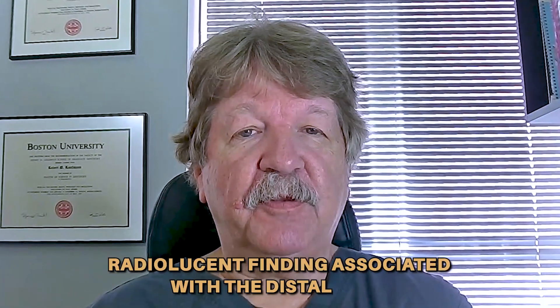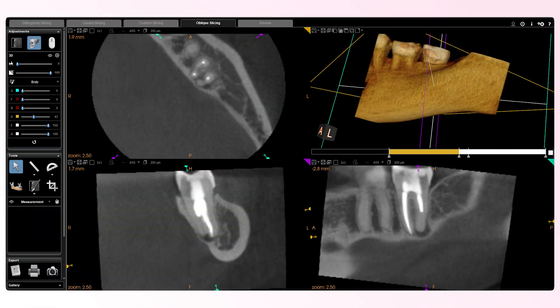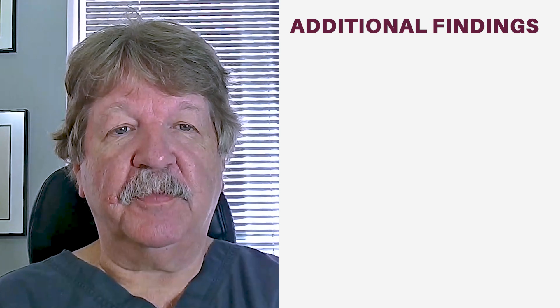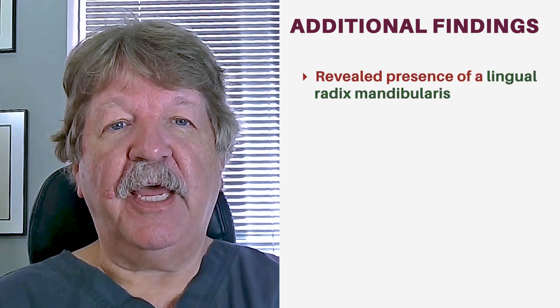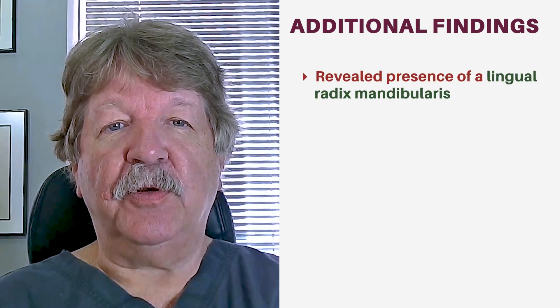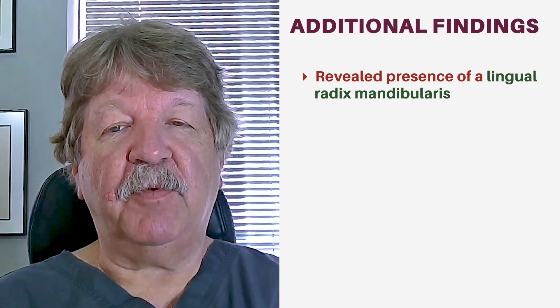Conventional periapical imaging showed a radiolucent finding associated with the distal root. CBCT imaging confirmed the finding associated with the distal root. However, further examination of the root in the CBCT image revealed the presence of a lingual root — a fused radix mandibularis.